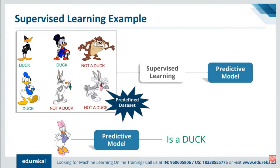You might be wondering why this category is named supervised learning. It is called supervised learning because the process of an algorithm learning from the training data set can be thought of as a teacher supervising the learning process. If we know the correct answers, the algorithm iteratively makes predictions on the training data and is corrected by the teacher. The learning stops when the algorithm achieves an acceptable level of performance.